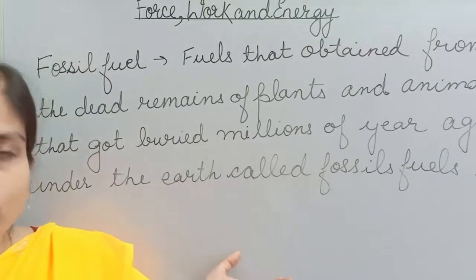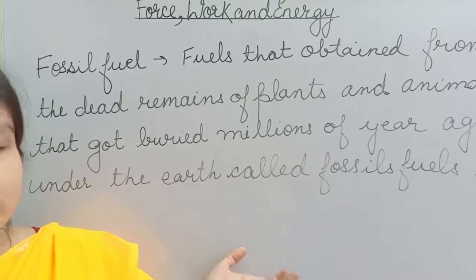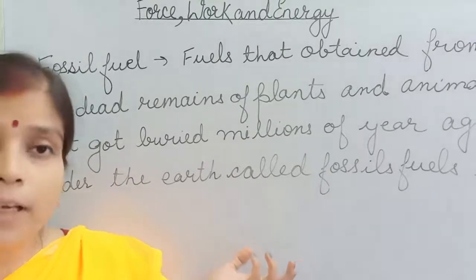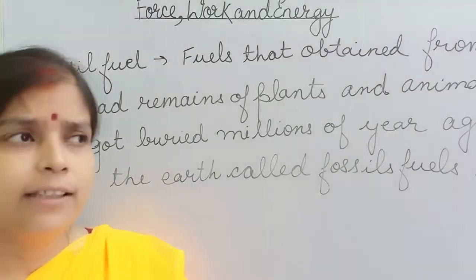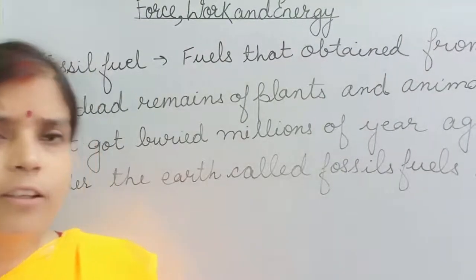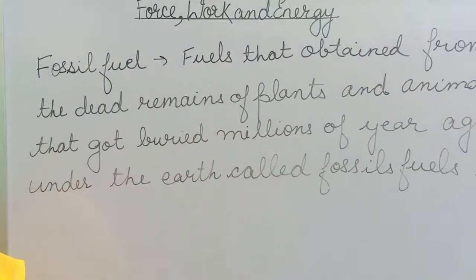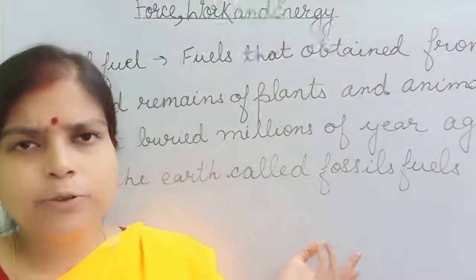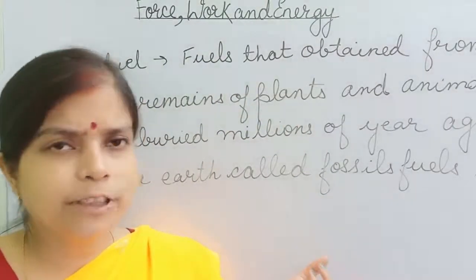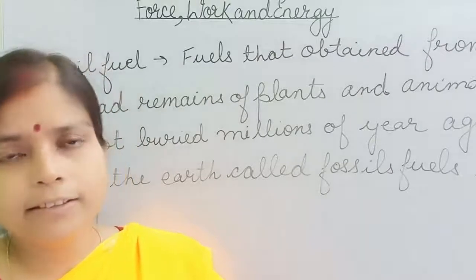Coal is the fossil fuel which we obtain from plants, and petroleum is the fossil fuel we get from animals. Coal is the remnant of the wood of plants that was buried inside the earth for millions of years, and after that it converted into coal — and that we are using for generating energy.